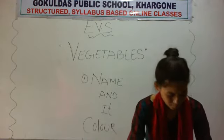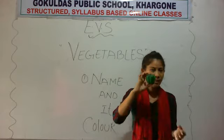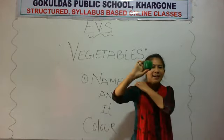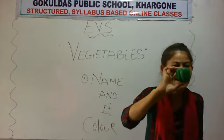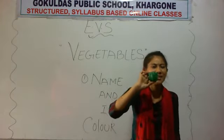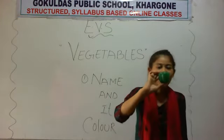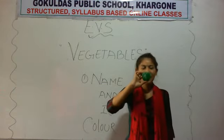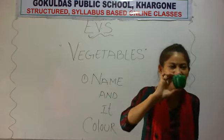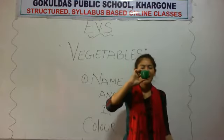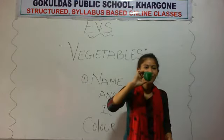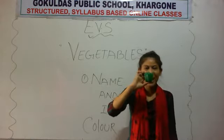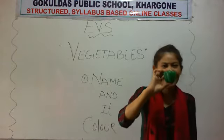Now what is this? Vegetable. Which vegetable is this? This is capsicum. What is the color of this capsicum? Green color.